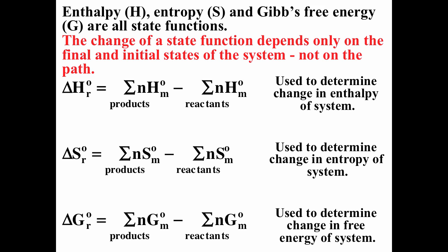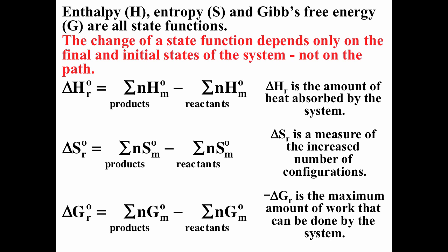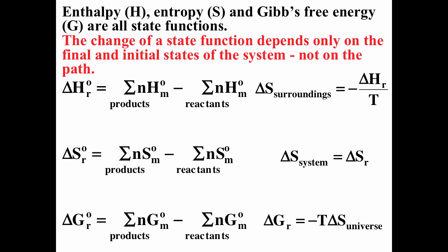All three — enthalpy, entropy, and Gibbs free energy — are state functions, meaning the change depends only on the final and initial states, not on the path. This makes them much easier to deal with, so we can use products minus reactants for all of them. Delta H tells us how much heat was absorbed by the system or surroundings. Delta S is the change in entropy for the system, related to configurations. Minus delta G is actually the maximum amount of work that can be done by the system — it's the change in potential energy of the system. We can also use delta H to determine delta S of the surroundings: delta S of surroundings equals minus delta H over T. Delta G is important in terms of chemical potential energy and relating to delta S of the universe, because by the second law, if entropy of the universe increases, the process is spontaneous.